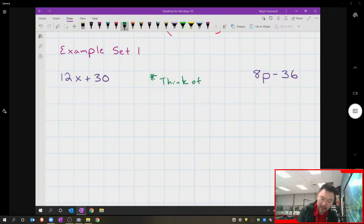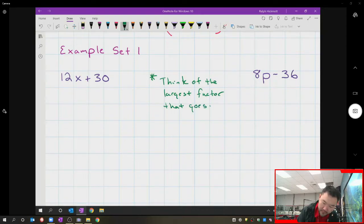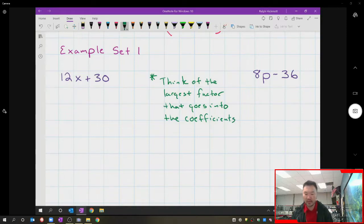Think of the largest factor that goes into the coefficients. When I say coefficients, remember I'm talking about the numbers in front of the variable. We can also say like 30 in this case is a constant. So what we're thinking of is the largest number that goes into both.